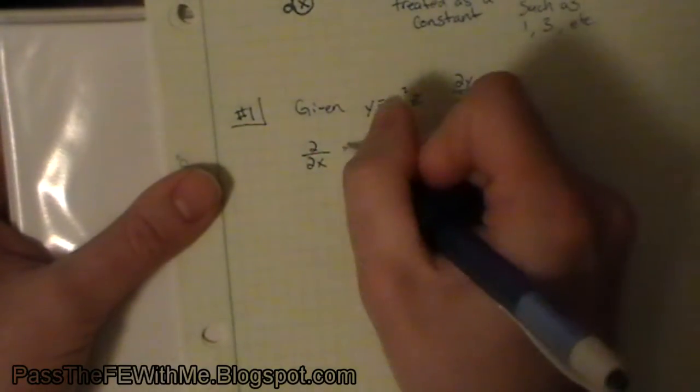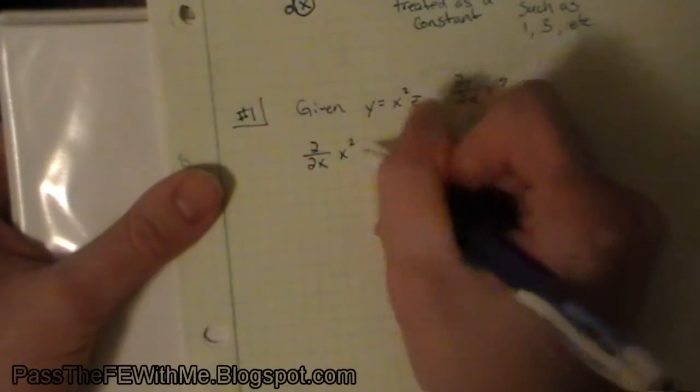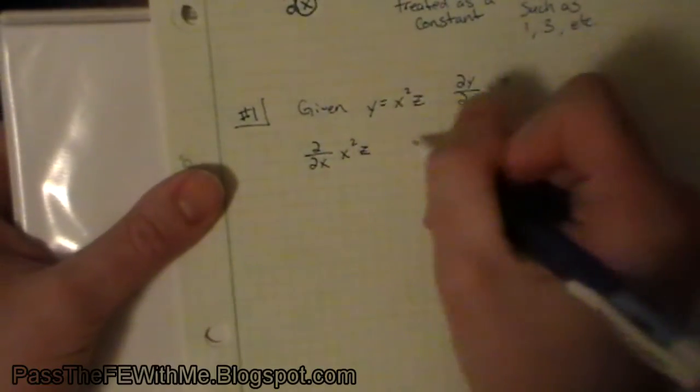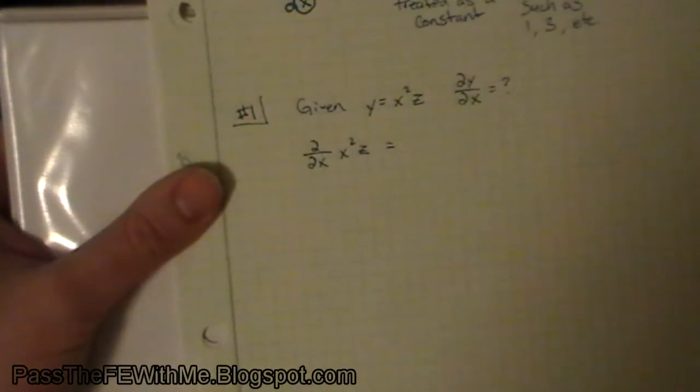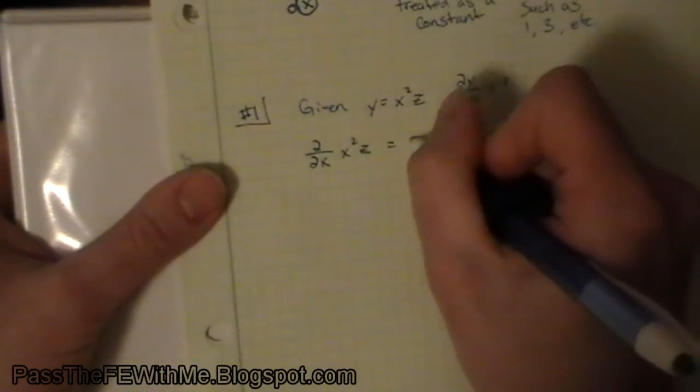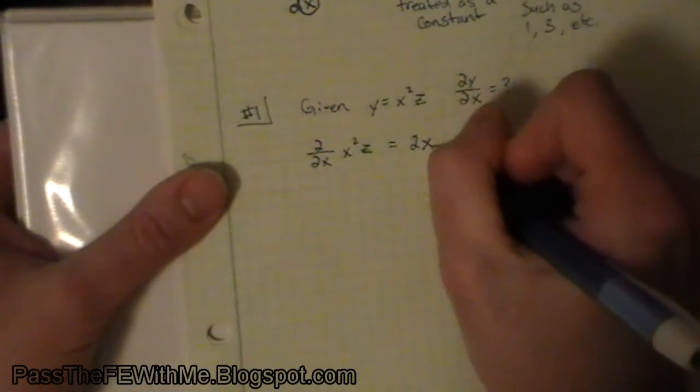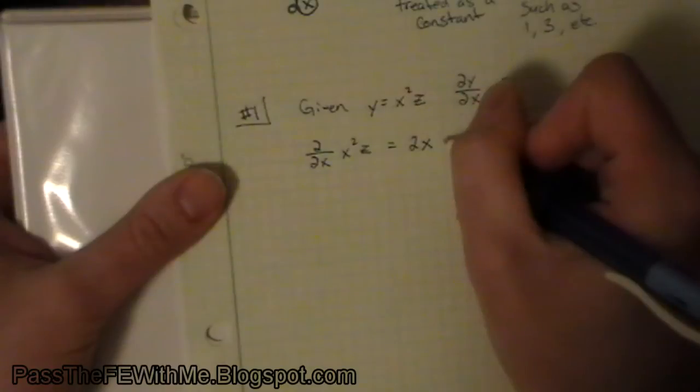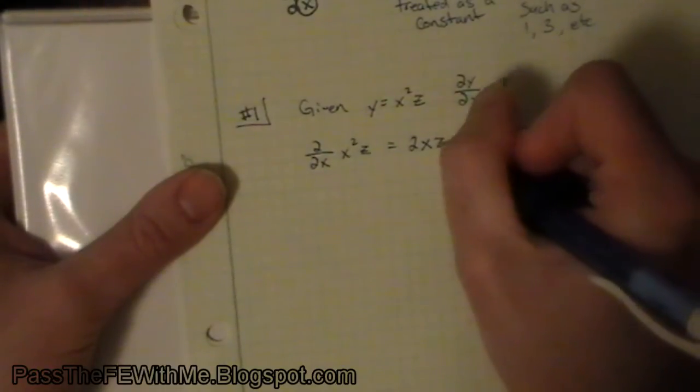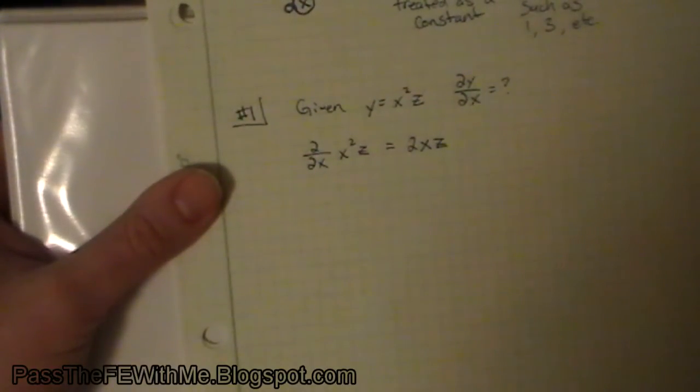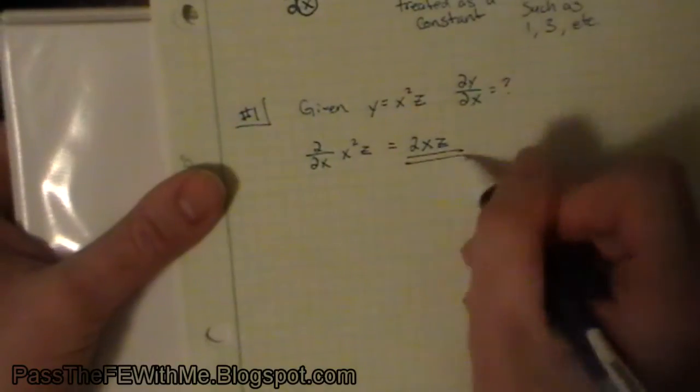The partial derivative with respect to x of x squared z equals: bring the two down, keep the x, and z is just like a constant, so that's the answer, 2xz.